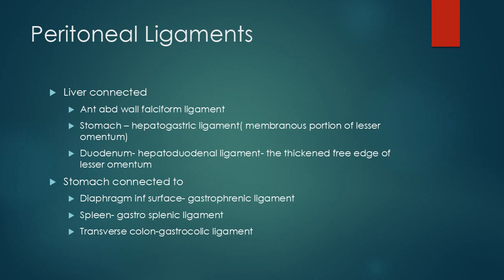Behind the free edge of the hepatoduodenal ligament there is an opening known as the foramen of Winslow. If you put your finger inside, you will go into the lesser sac. You enter from the greater sac into the lesser sac through the foramen of Winslow.